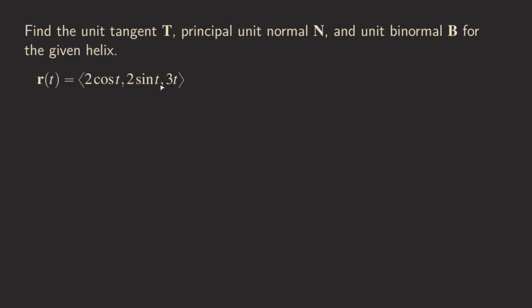Hello everyone, today let's talk about finding the unit tangent, principal unit normal, and then the unit binormal vector for this given helix. You can see that for the x and y components we have the cosine function, the sine function, and then the z component we have the 3t.